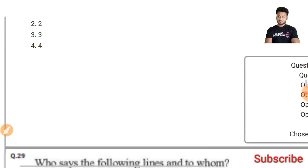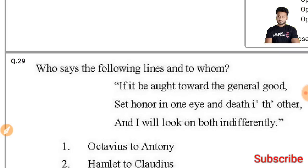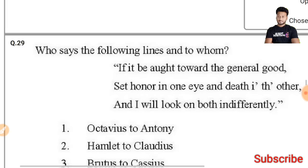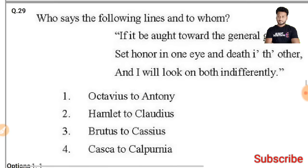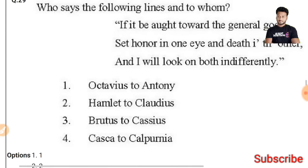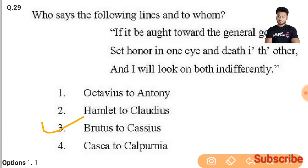Question 29: Who says the following lines and to whom — 'If it be aught toward the general good, set honor in one eye and death i' th' other, and I will look on both indifferently'? The right answer is Brutus to Cassius — this speech has been spoken by Brutus to Cassius.